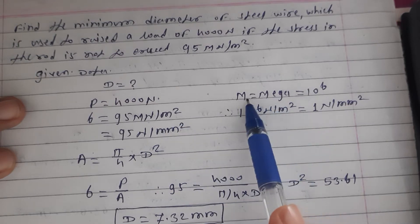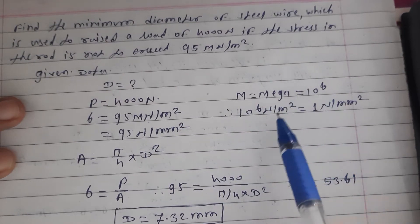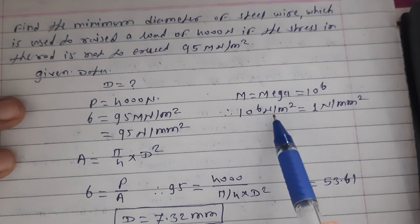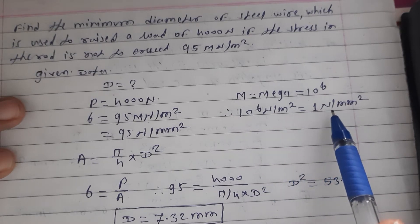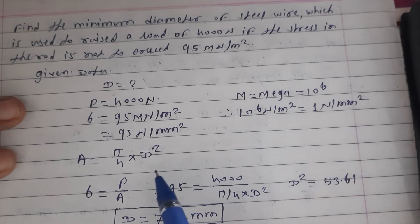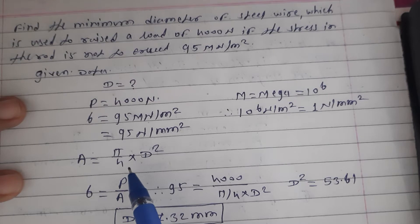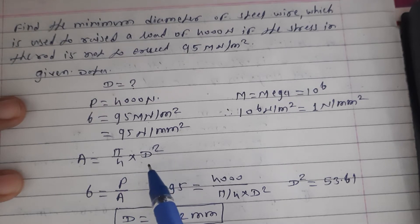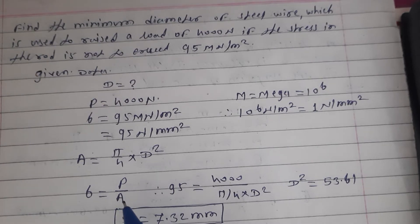We know the relation: mega is equal to 10 raised to 6, and 10 raised to 6 newton per meter square is equal to 1 newton per mm square. We already know that. Then we know the area formula: area is equal to pi by 4 into D square. Then stress formula: stress is equal to P by A, force upon area.